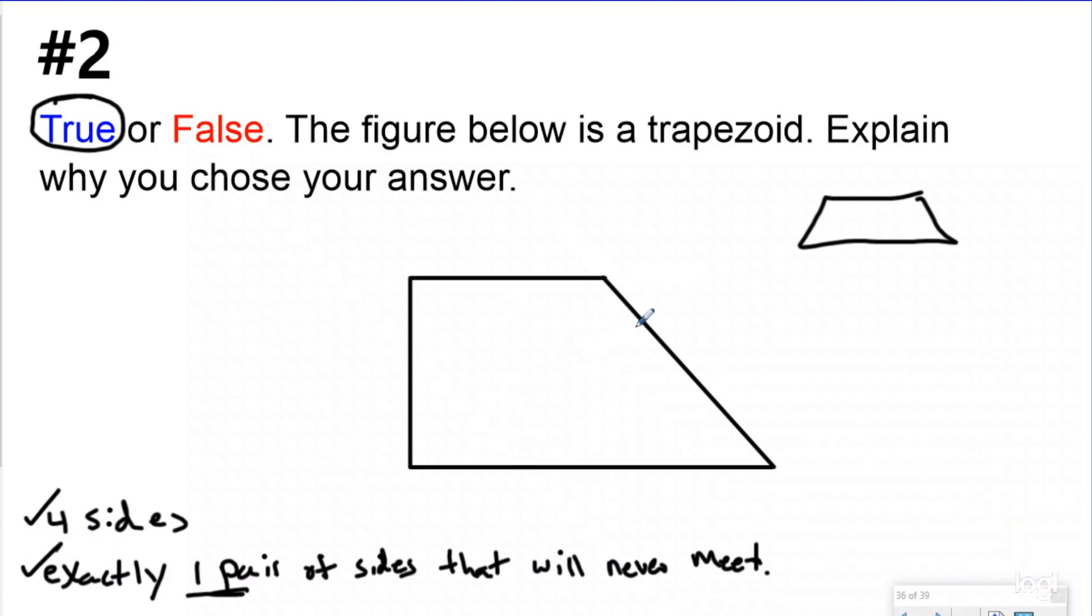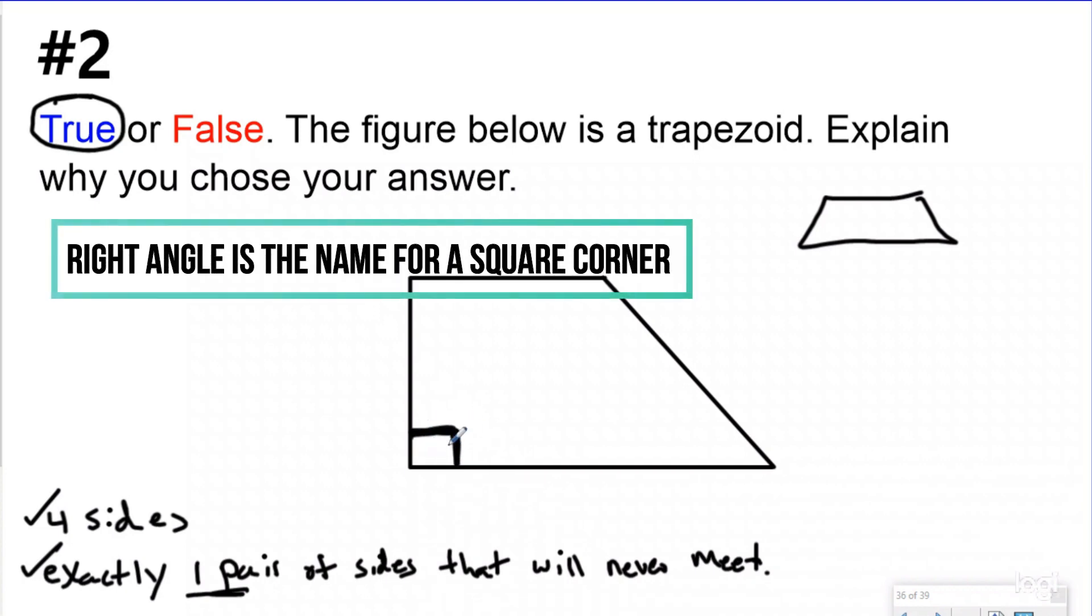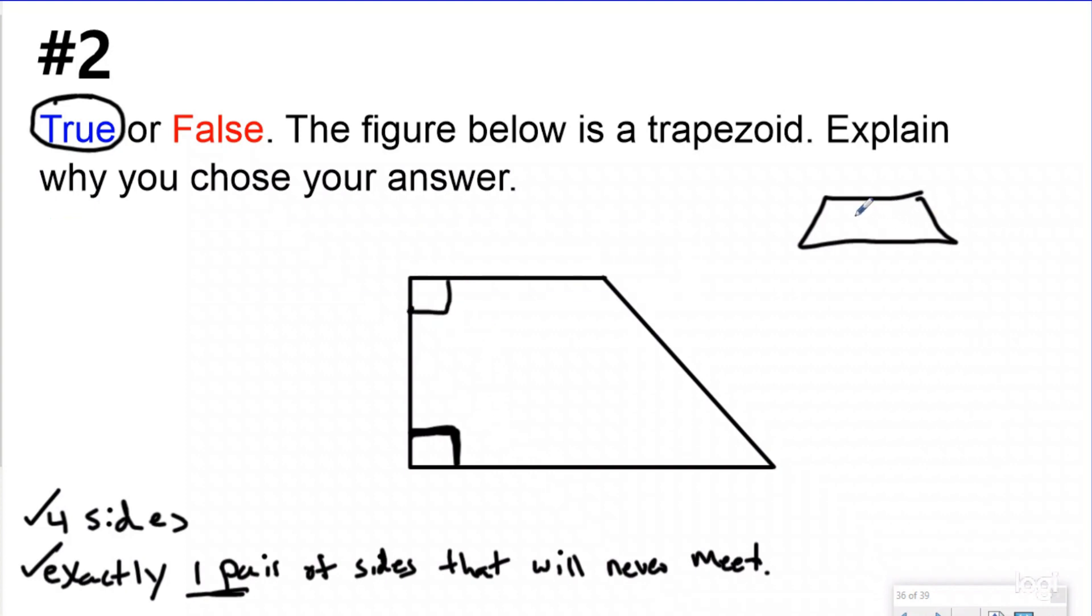So what I would say to explain why I chose true: this is a trapezoid because it has the attributes of a trapezoid. And this is actually called a right trapezoid. You don't need to know this shape right now, but that's all right, you'll learn about it later in your math life. It's a right trapezoid because it has a square corner. Matter of fact, it actually has two square corners. A normal trapezoid that we think about does not have any square corners. That's why this is called a right trapezoid.